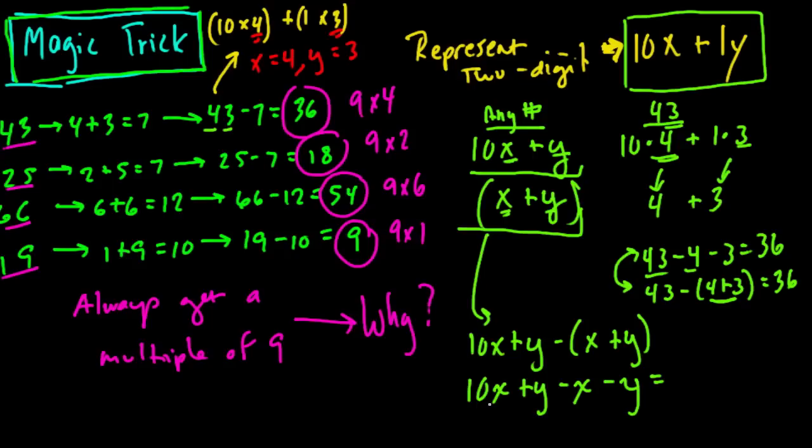Now we can combine like terms. One thing I notice right away: we have a positive y and a negative y, so those cancel out. Then we have 10x minus x. 10x minus x, what's that? Well, 10x minus 1x equals 9x. So algebraically, we showed that any number you pick, any two-digit number, you get 9 times something. In other words, some multiple of 9. You can have one 9 or two 9s or three 9s or four 9s, any number of 9s. So it doesn't matter what number you pick, you'll always get a multiple of 9. That's the algebra here.